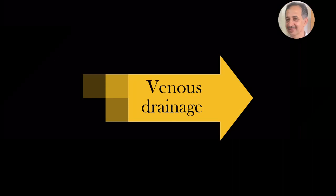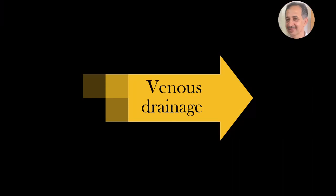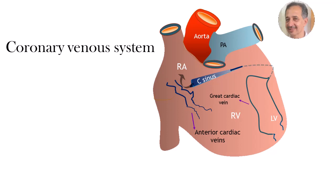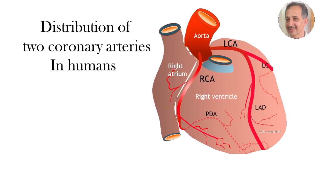There are two systems of veins: superficial and deep. The superficial system drains mainly the left ventricle and ends in the coronary sinus and anterior cardiac vein, which in turn drain to the right atrium. The deep system drains all the chambers of the heart, opening directly into the cardiac chambers — mainly to the right atrium and right ventricle — at multiple sites via three sets of vessels: arteriosinusoidal, arterioluminal, and Thebesian veins.